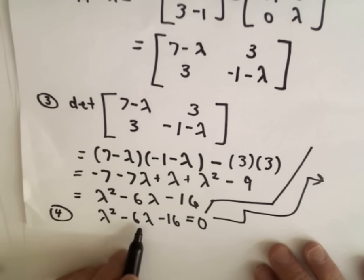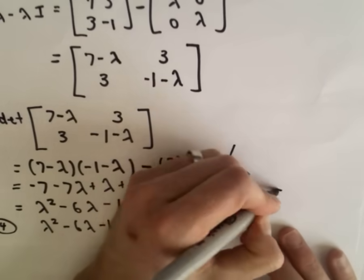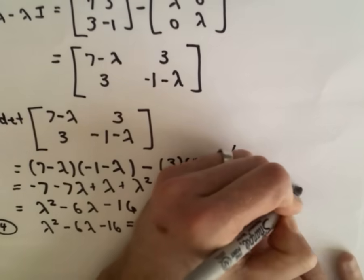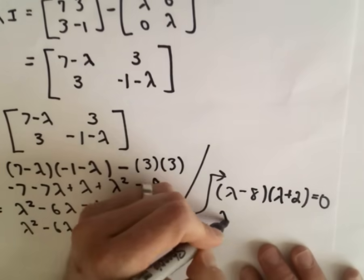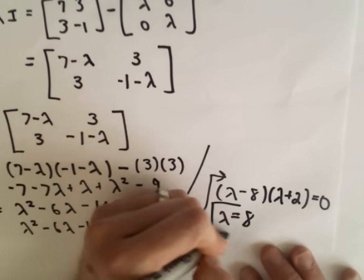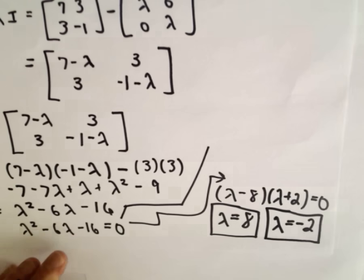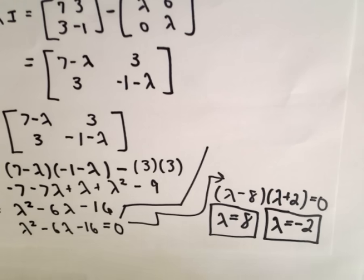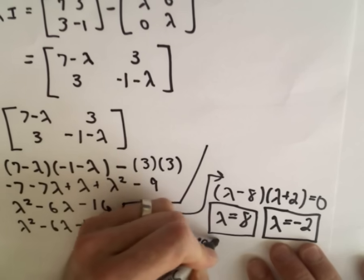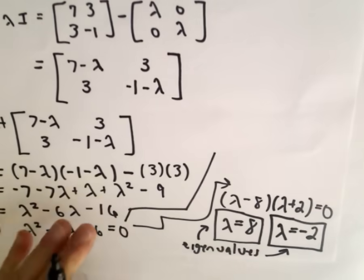Step 4: we take that equation lambda squared minus 6 lambda minus 16, set it equal to zero, and solve for lambda. This factors as lambda minus 8 multiplied by lambda plus 2. Setting each factor equal to zero, we get the solutions lambda equals 8 and lambda equals negative 2. So now we've got our eigenvalues.